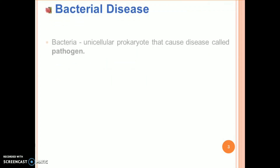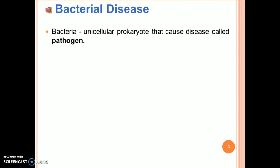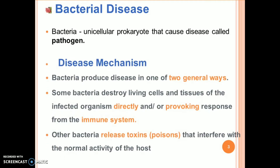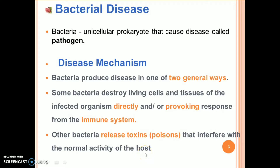What is bacterial disease? Bacteria is a unicellular prokaryote that causes disease, called a pathogen. Disease mechanisms are: first, some bacteria destroy living cells and tissues of the infected organism directly and/or by provoking a response from the immune system; and other bacteria release toxins, called poisons, that interfere with the normal activity of the host.